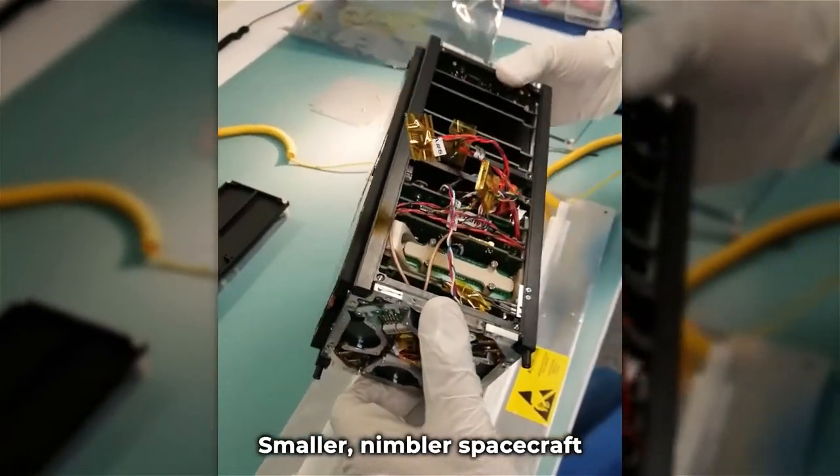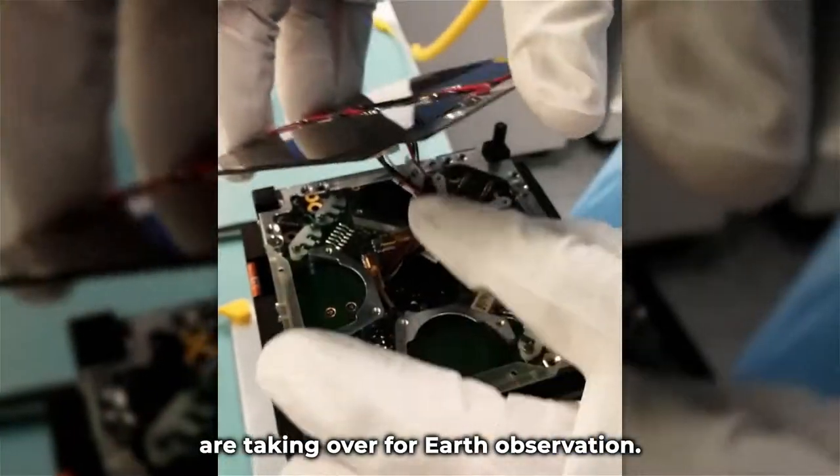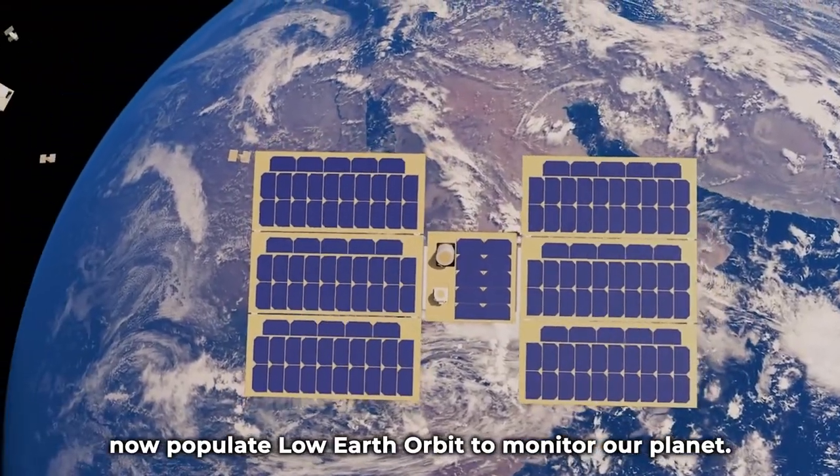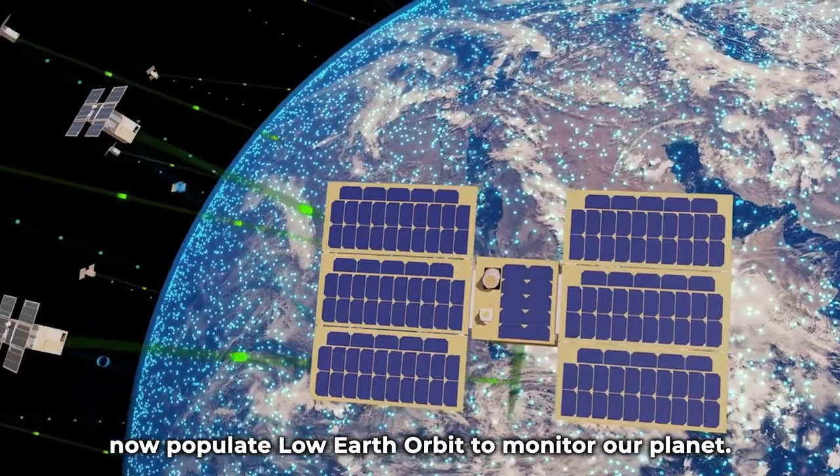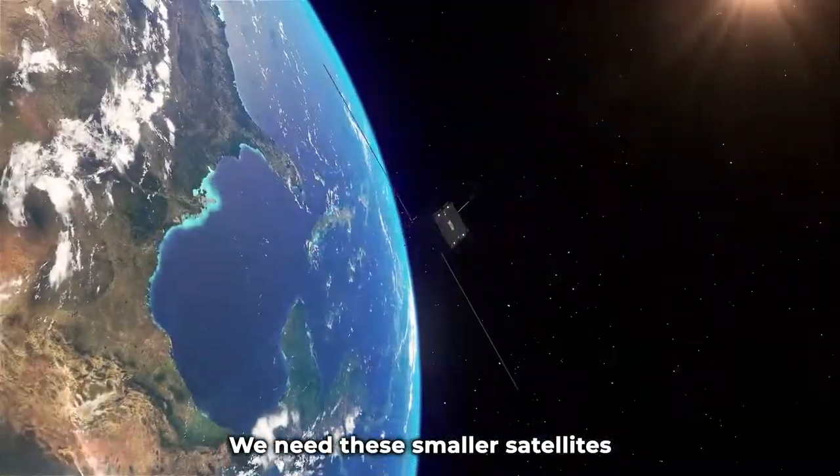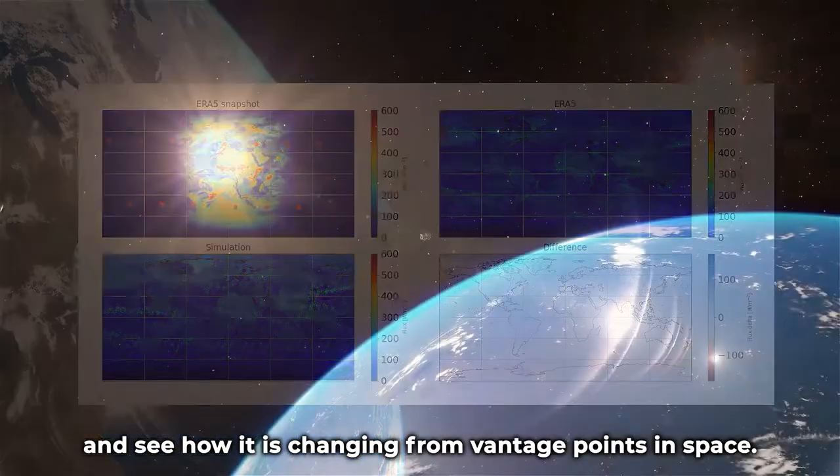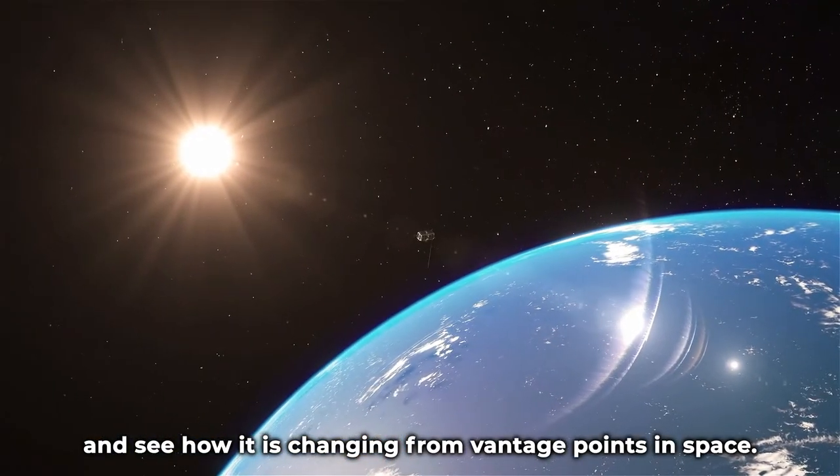Smaller, nimbler spacecraft are taking over for Earth observation. Literally swarms of spacecraft now populate low Earth orbit to monitor our planet. We need these smaller satellites and CubeSats to observe Earth and see how it is changing from vantage points in space.